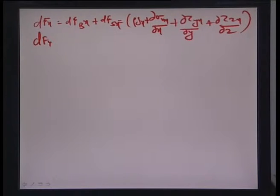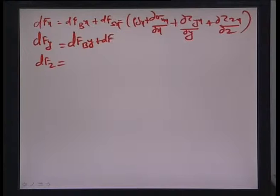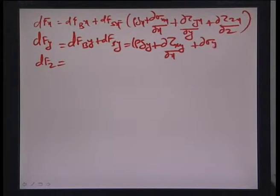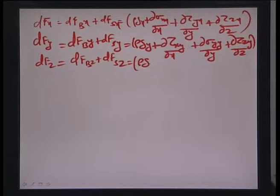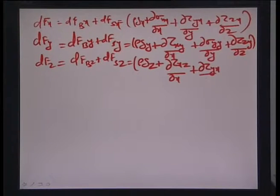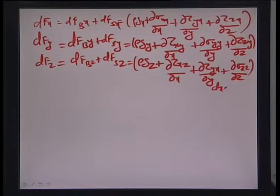Similarly, dF_y equals rho*g_y plus d(tau_xy)/dx plus d(sigma_yy)/dy plus d(tau_zy)/dz. And dF_z, the body force in the z-direction plus the force due to stress in the z-direction, equals rho*g_z plus d(tau_xz)/dx plus d(tau_yz)/dy plus d(sigma_zz)/dz, each multiplied by the volume element dx dy dz.